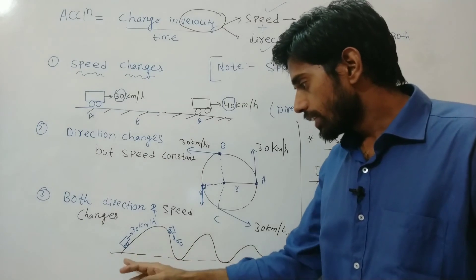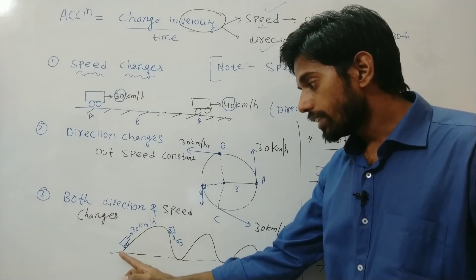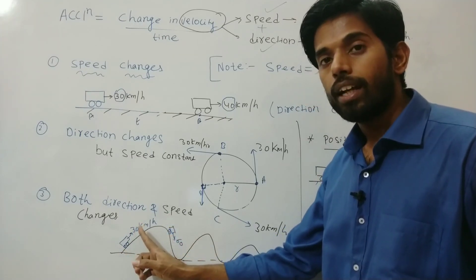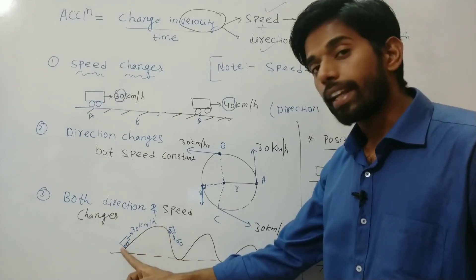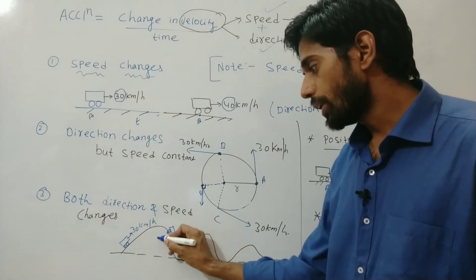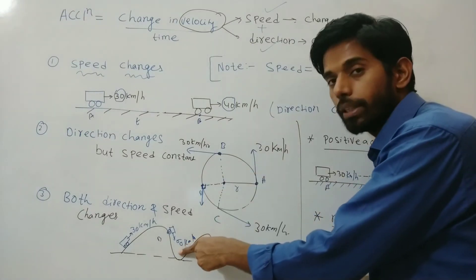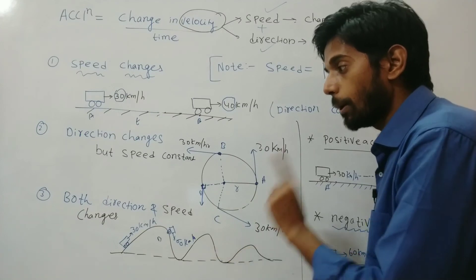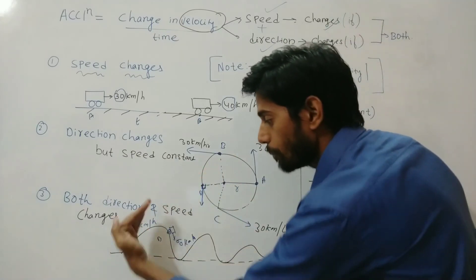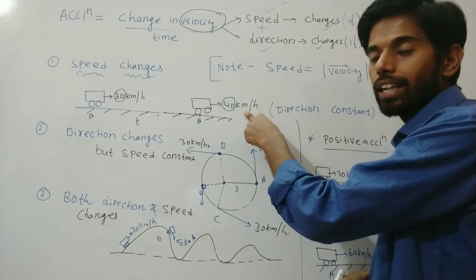Next example: a vehicle moves along a path where both speed and direction are changing. At one point it has a velocity of 30 km/h in one direction, and after time t it reaches point B where the speed is 60 km/h with a different direction. Both speed (30 to 60 km/h) and direction are changing. Hence we can say the body is accelerating in all three cases — when speed changes, when direction changes, and when both change.